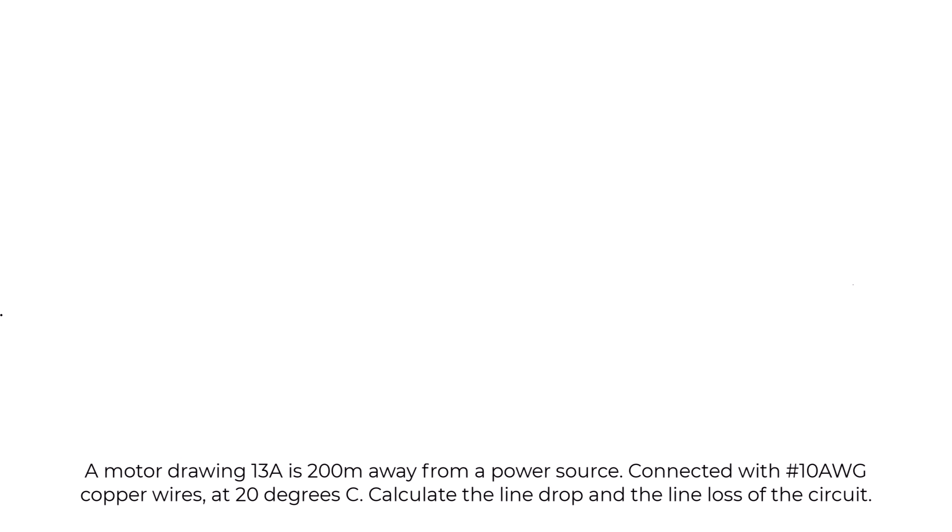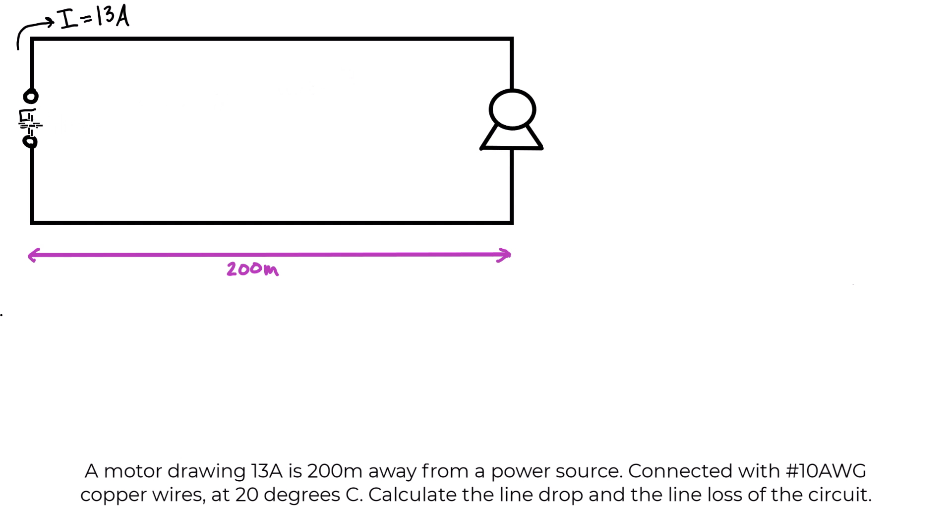For this problem, the circuit looks basically like this: we have our source of power, then 13 amps of current flowing through our motor 200 meters away. Often this is a trick question because we have a wire here that's 200 meters long and a wire here that's 200 meters long, so we have 400 meters of wire total.